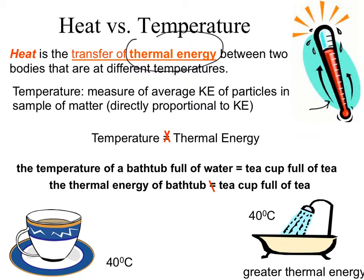You might not immediately see a difference between temperature and thermal energy. Consider a bathtub and a cup of tea filled with water at the exact same temperature — 40 degrees C. Each particle has the same kinetic energy, so they read the same on a thermometer. However, the thermal energy of the bathtub is not equal to the teacup, because mass dictates how much heat is transferred. By default, there's more thermal energy in the bathtub at 40°C than in the teacup.